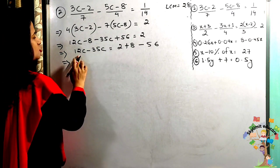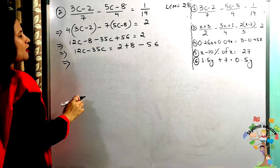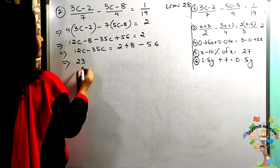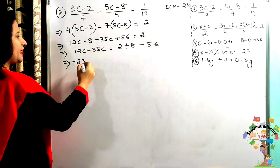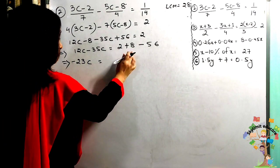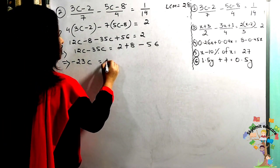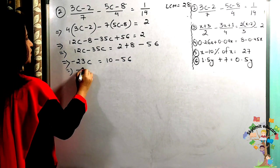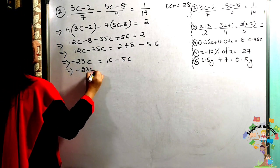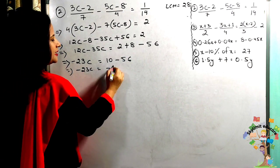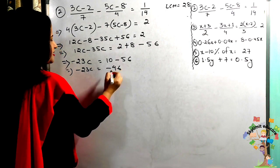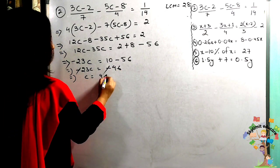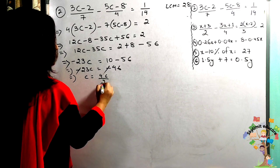12c − 35c = −23c. On the right: 2 + 8 = 10, then 10 − 56 = −46. So −23c = −46. The minus signs cancel, giving c = 46/23 = 2.